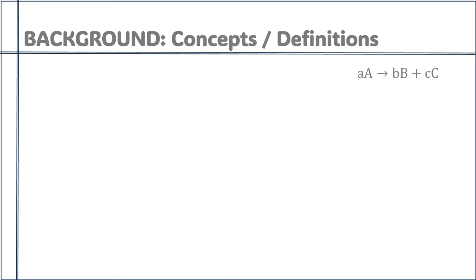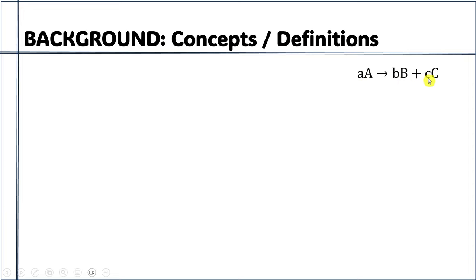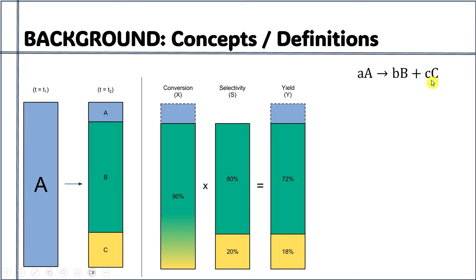Besides reactor selection, let's also have a look at the basic concepts and definitions of reaction chemistry. Consider a simple case where A moles of reactant A are converted into B moles of product B and C moles of product C. For this simple reaction, you may encounter terms including conversion, selectivity, and yield.